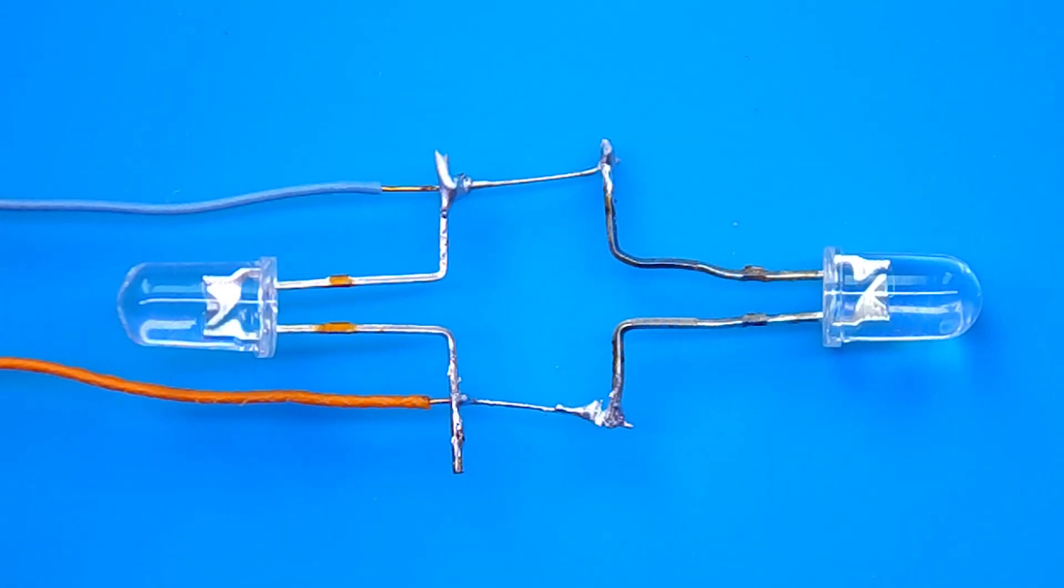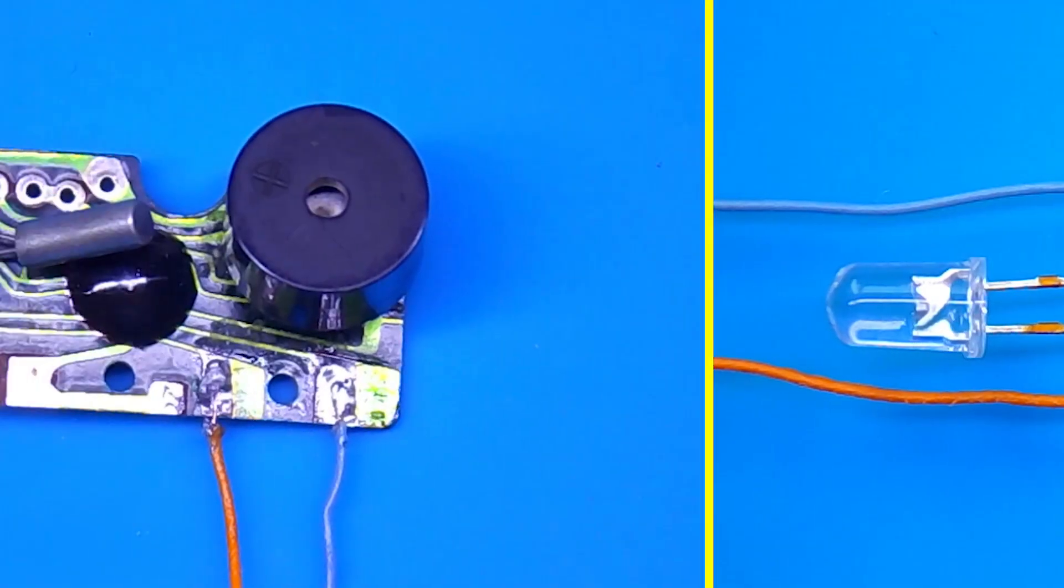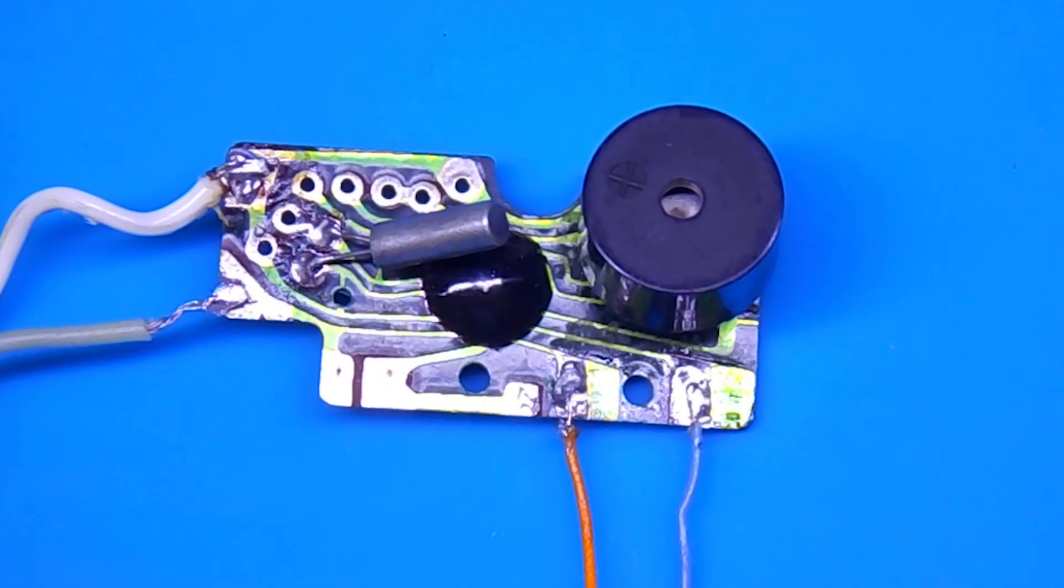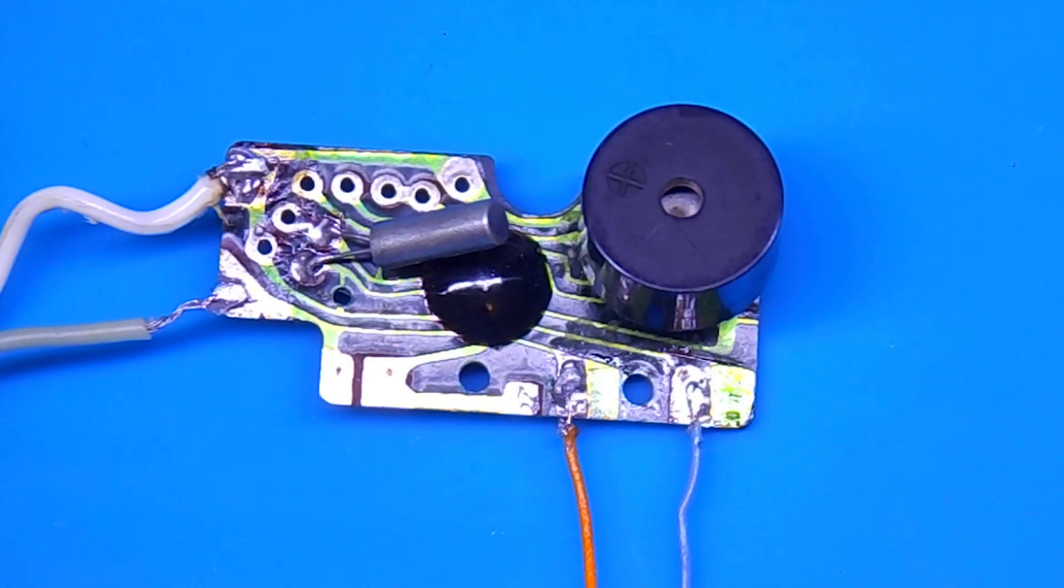But that is not all. If you want to make a really cool scheme with flashing lights, then you can add another LED. Look, there are two contacts on the board. When closed, the clock alarm is turned on.